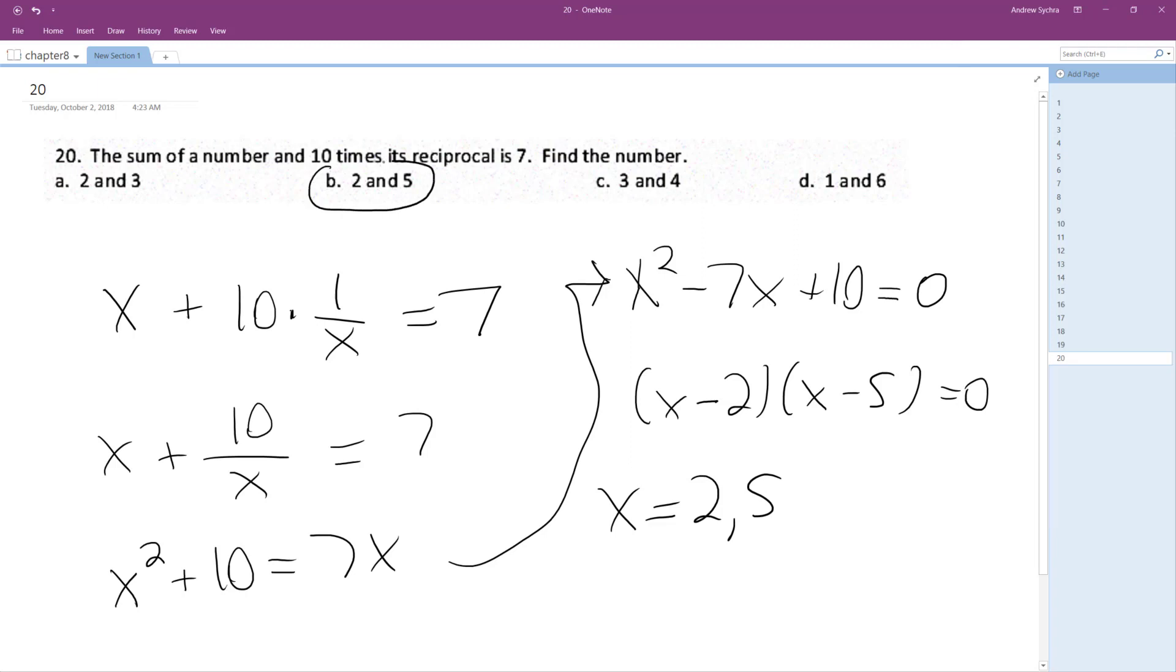And that works, 2 and 5. So for example, 2 plus 10 over 2, because 10 times 1 over its reciprocal, or 10 times one-half, that's equal to 2 plus 5, which is equal to 7.